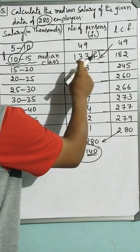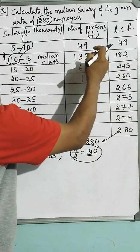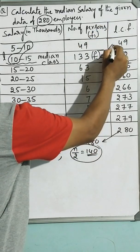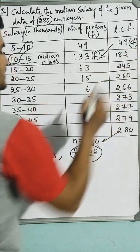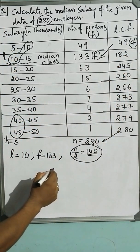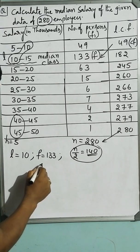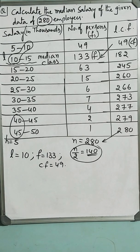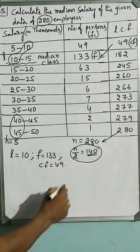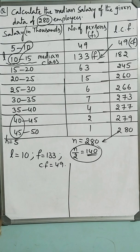And the cumulative frequency above the median class frequency is taken as cumulative frequency, cf. So cf is, let me write here, cf is 49. And you got all the required values. Let us go for the calculation.